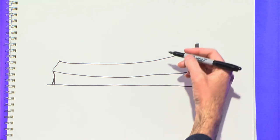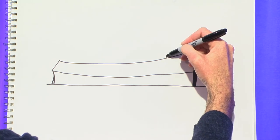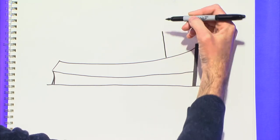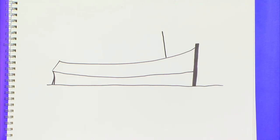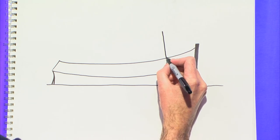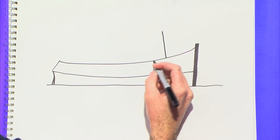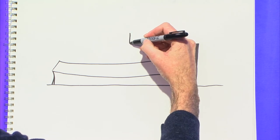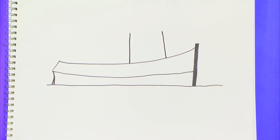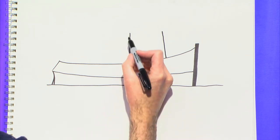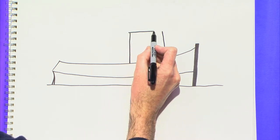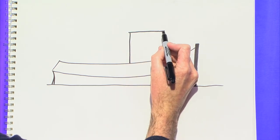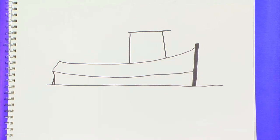All right, now we need a pilot house for our tugboat. So I'm going to put a slightly angled line there. That will be where the front window is. And then I'll put a vertical line right about there. And we're going to want a roof sitting on top of that. Maybe even stick it out a little bit further than that.